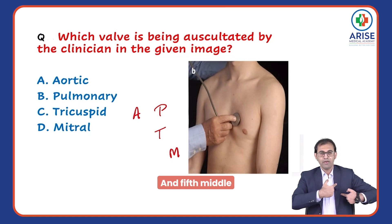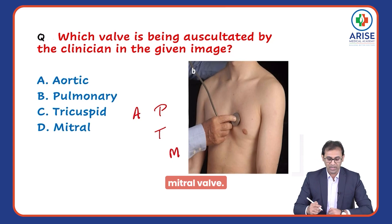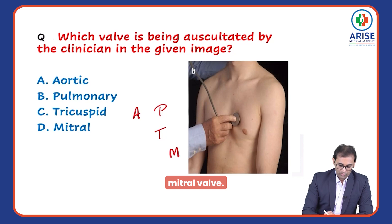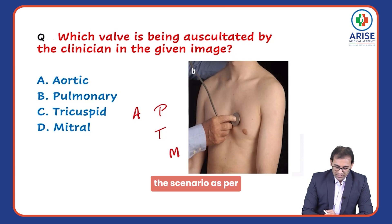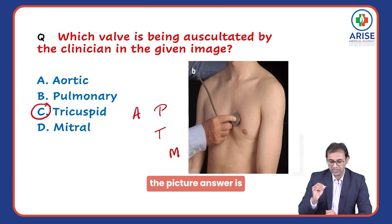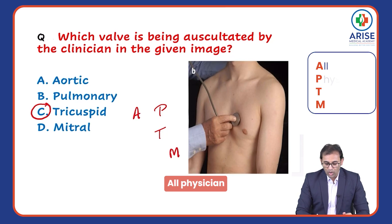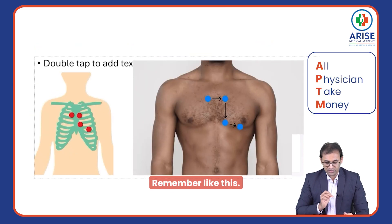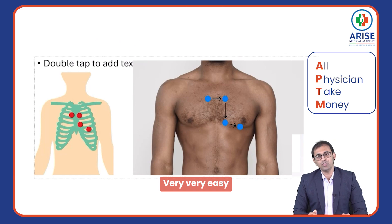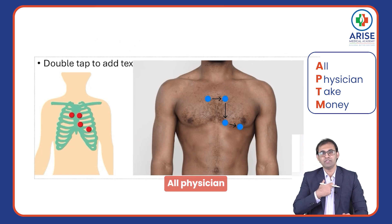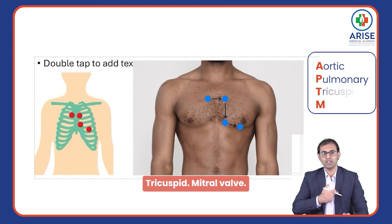So as per the scenario and the picture, the answer is clear. To memorize the sequence, remember: 'All Physicians Take Money' — Aortic, Pulmonary, Tricuspid, Mitral valve. Very easy to remember.